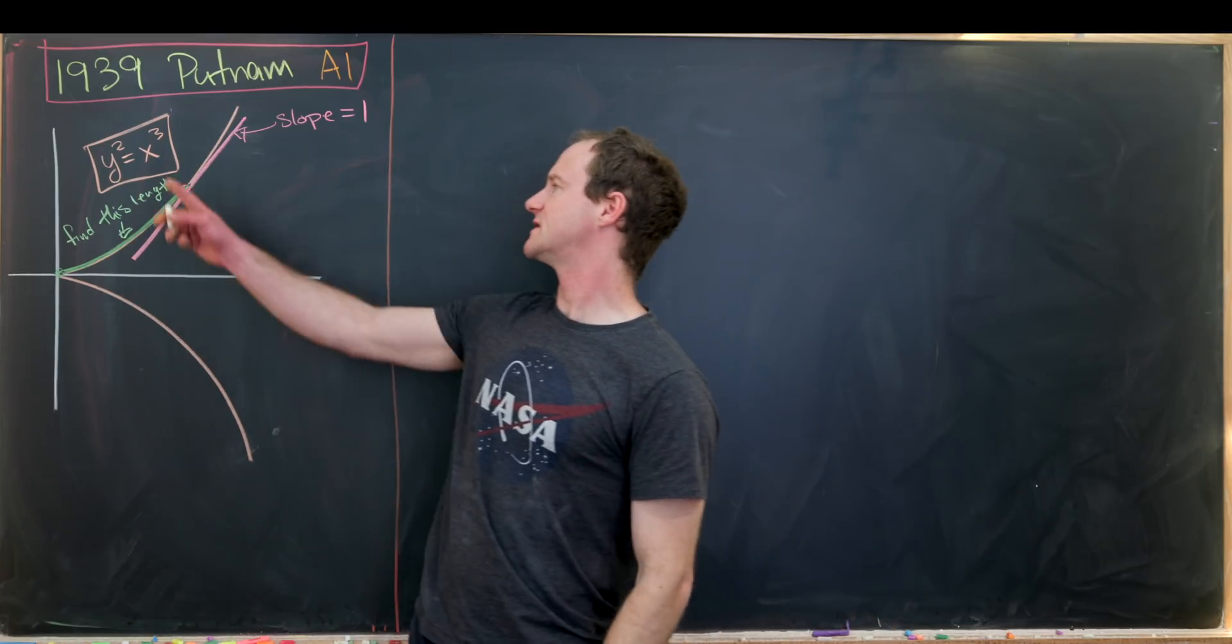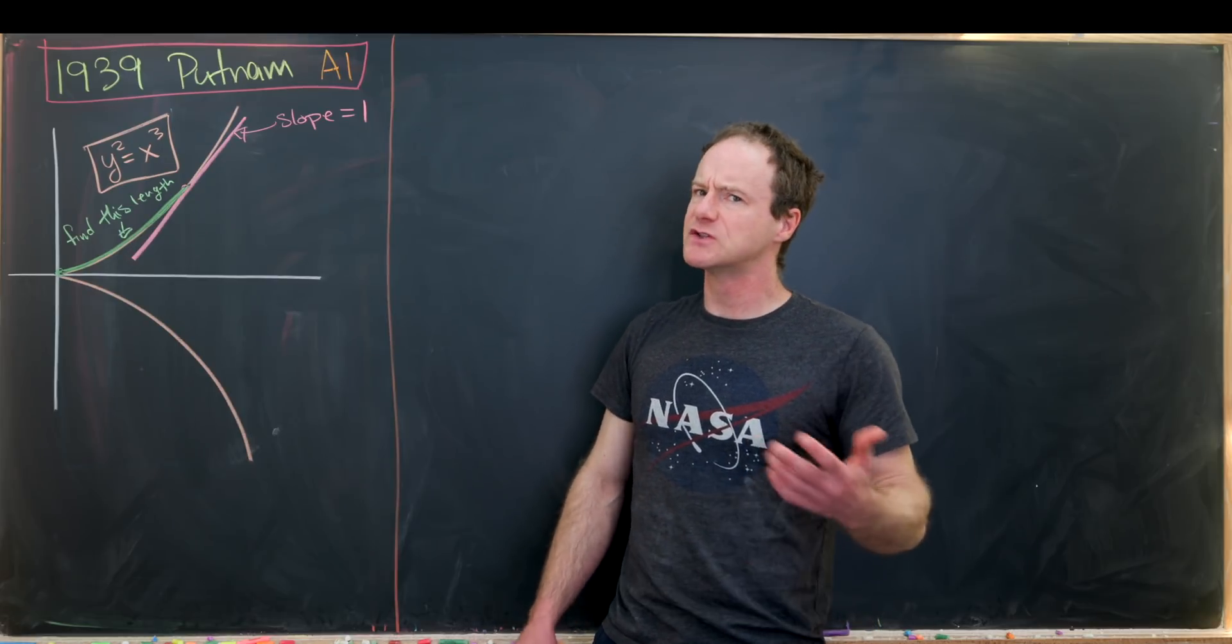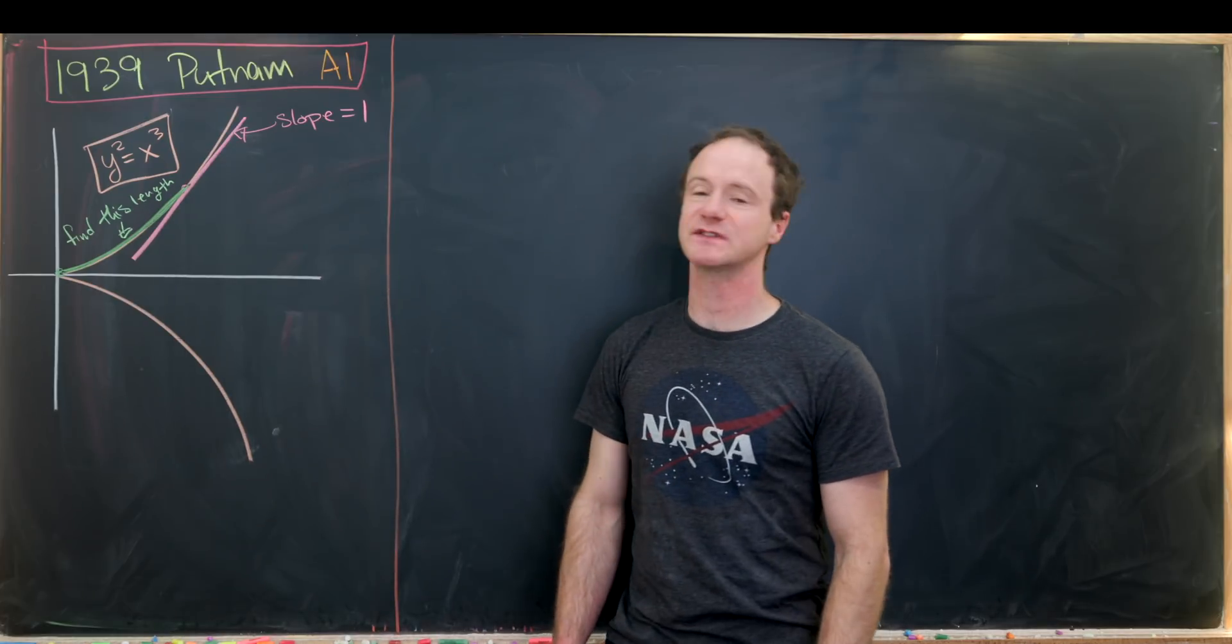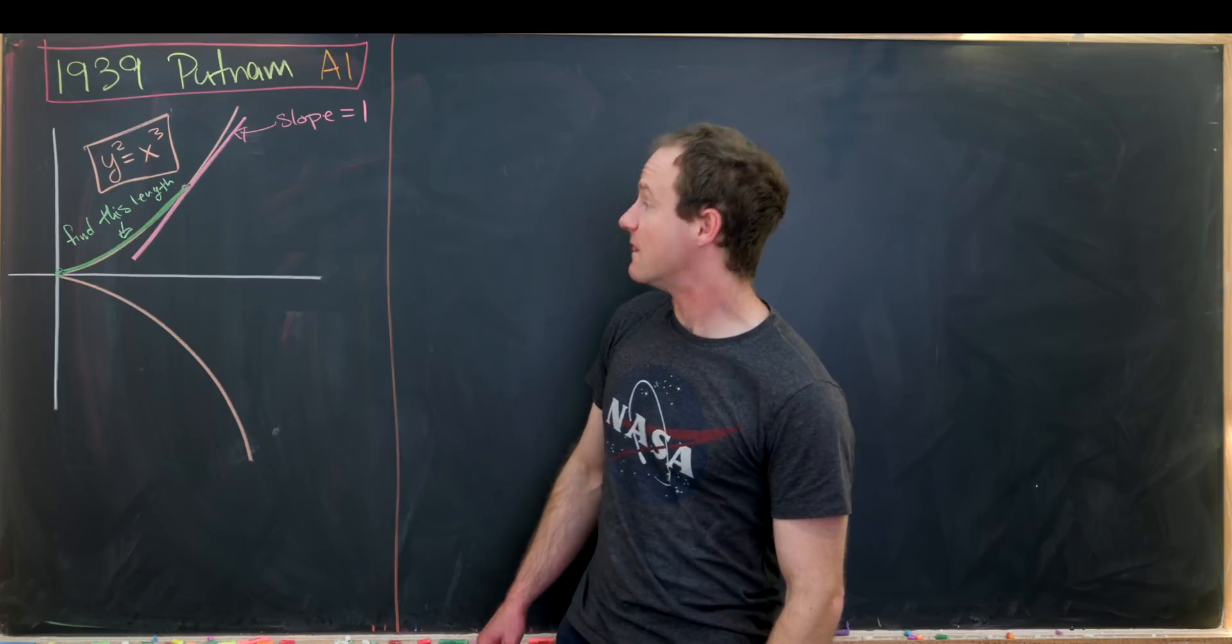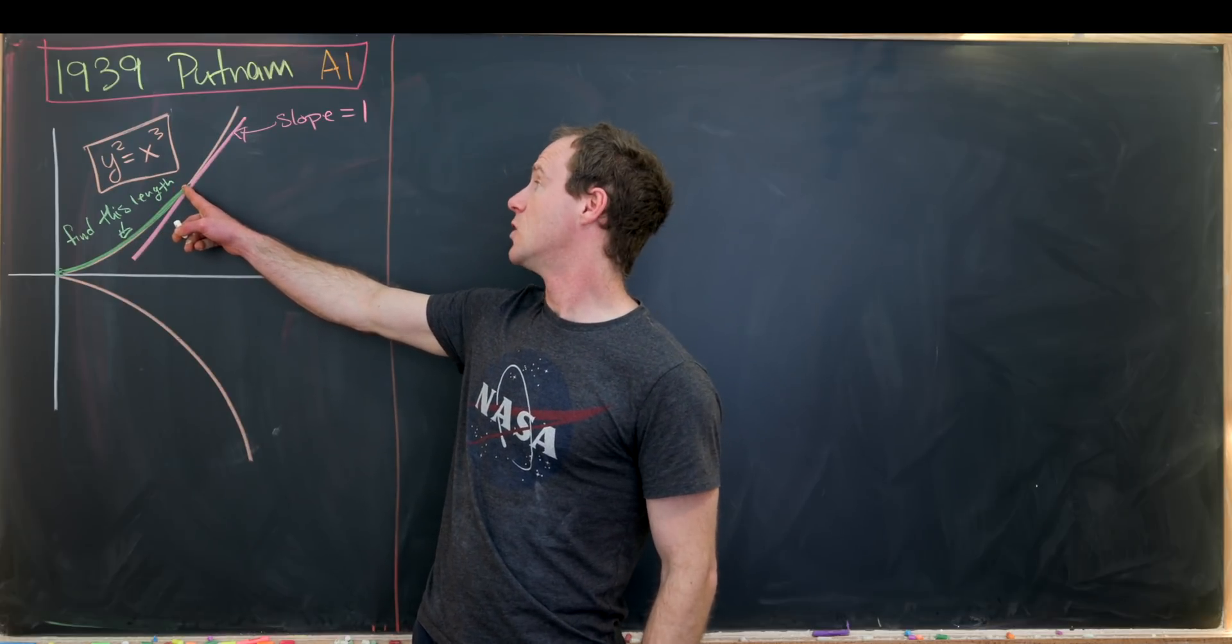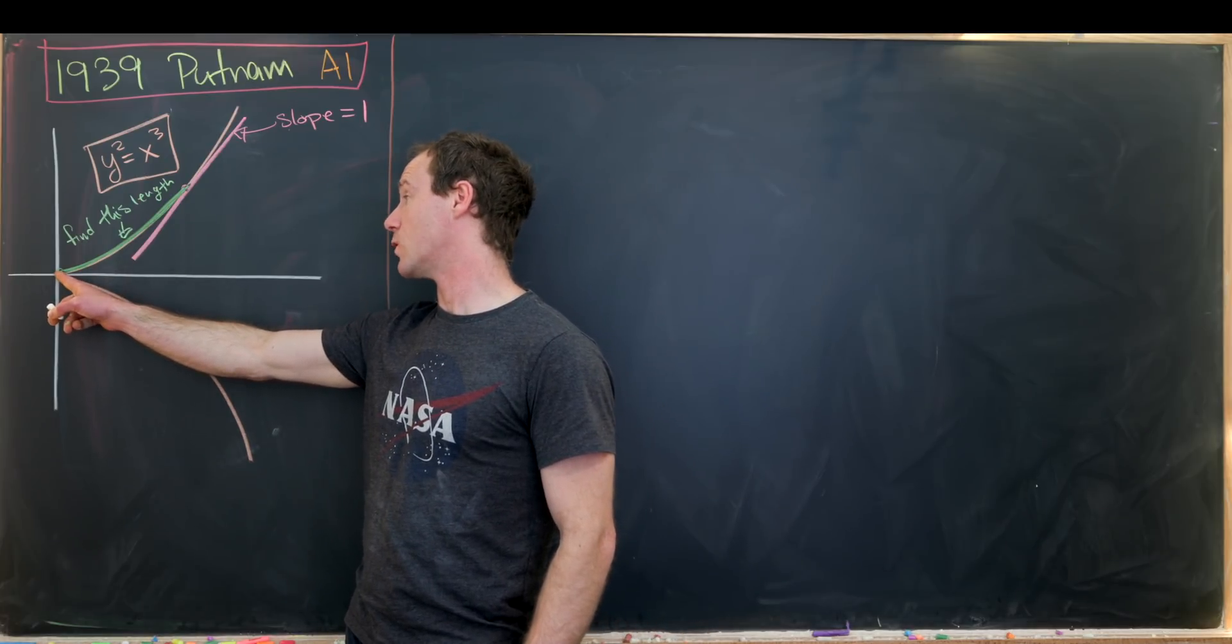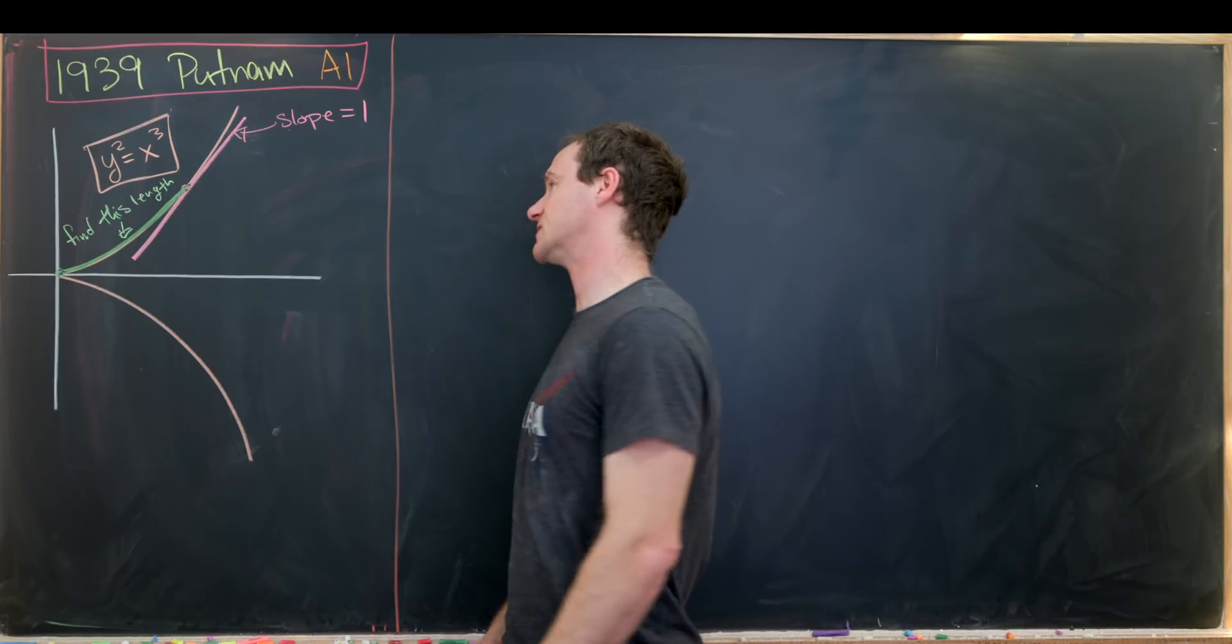We want to consider the graph of the elliptic curve y squared equals x cubed. It does not say that it's an elliptic curve, but I'm sure that using this curve y²=x³ is motivated by the problem writer being interested in elliptic curves. We want to find a point along that curve where the slope of the tangent is equal to 1 and then find the arc length from the origin to that point on the curve.